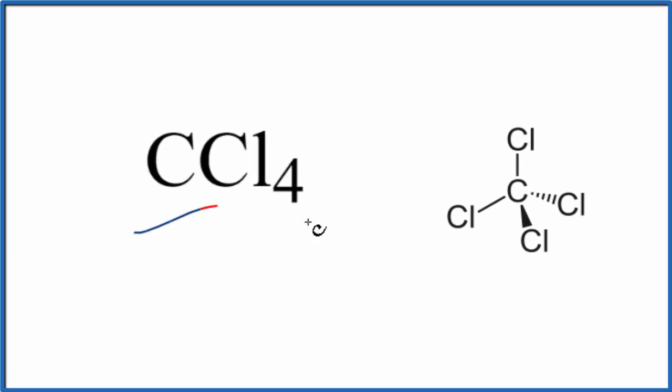In this video we'll look at whether CCl4, carbon tetrachloride, has resonance or not. The first thing we should do is draw a Lewis structure for carbon tetrachloride. Carbon has four valence electrons, chlorine has seven, and we have four chlorine atoms.